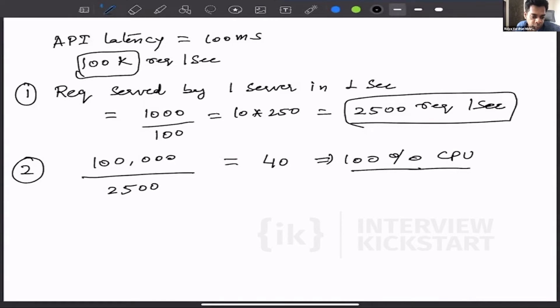But we have previously seen that we should be running our servers at 50% capacity in terms of CPU. So we will divide this 40 by 50%, which means if we expand it, it becomes 80. That means we need 80 servers here.